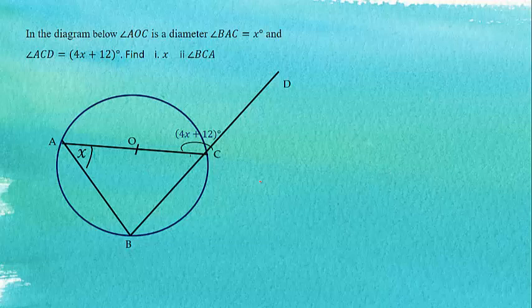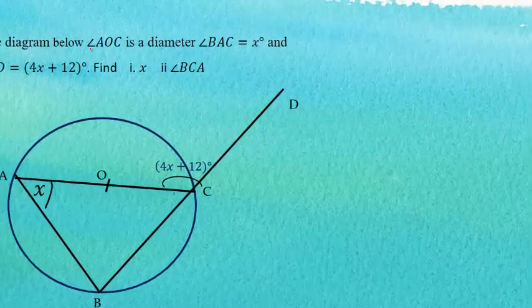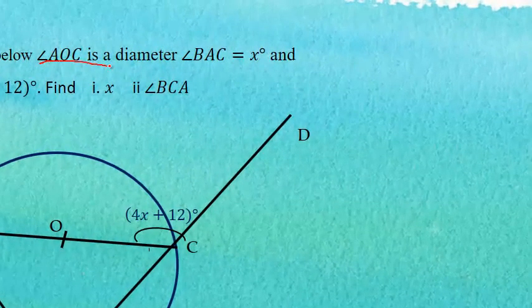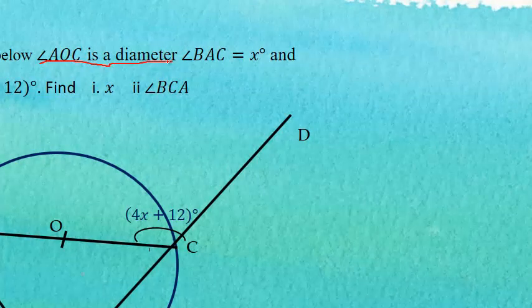Now in the diagram below, angle AOC is a diameter. This is very important. This means that the angle that subtends the circumference is 90 degrees.